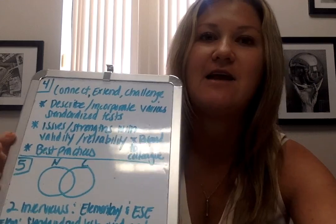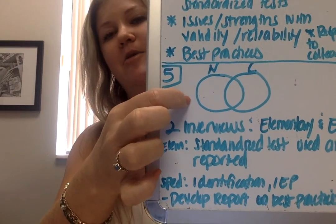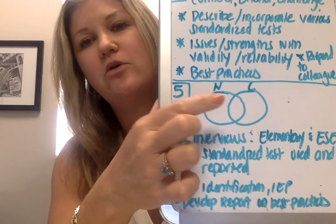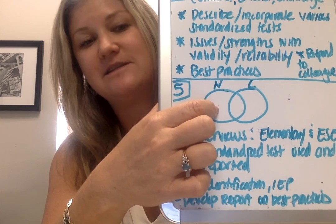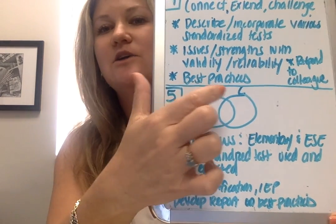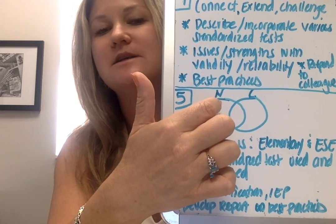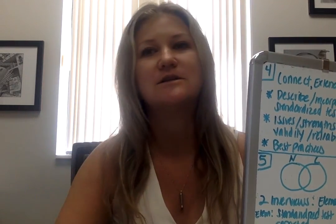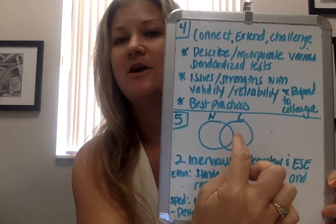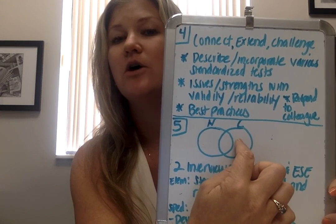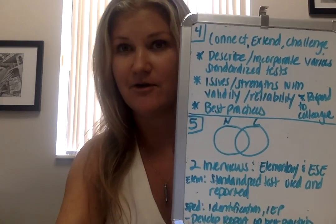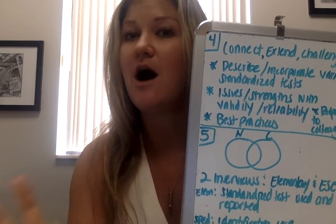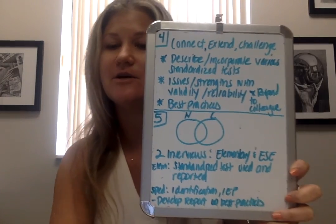For the first portion, you're going to create a Venn diagram — I drew one right here with two overlapping circles. The first circle is norm reference tests and the second is criterion reference tests. In the left space, put characteristics that belong only to norm reference tests. In the right space, put characteristics that belong only to criterion reference tests. In the middle, discuss the characteristics shared between both.